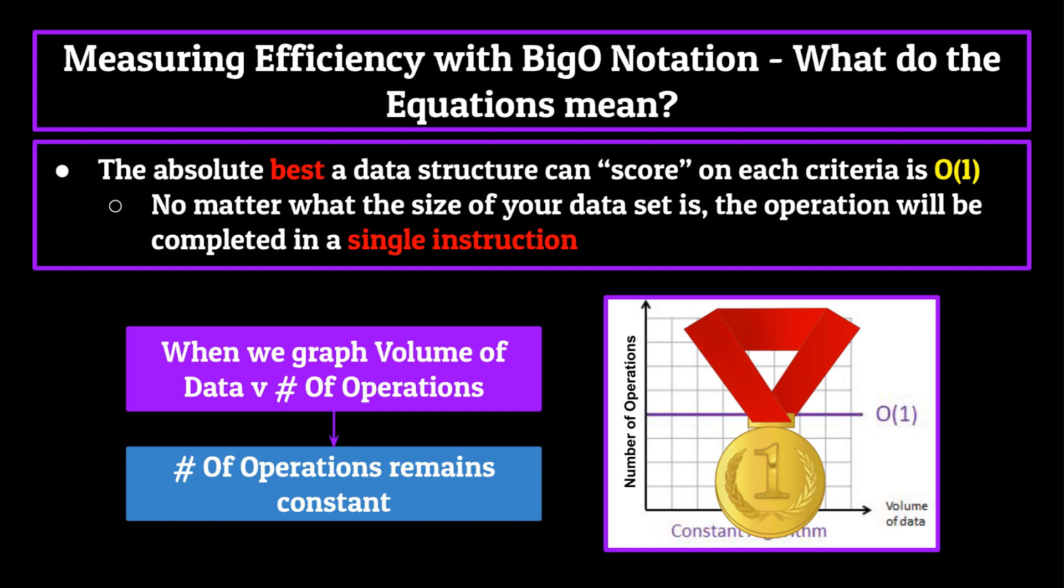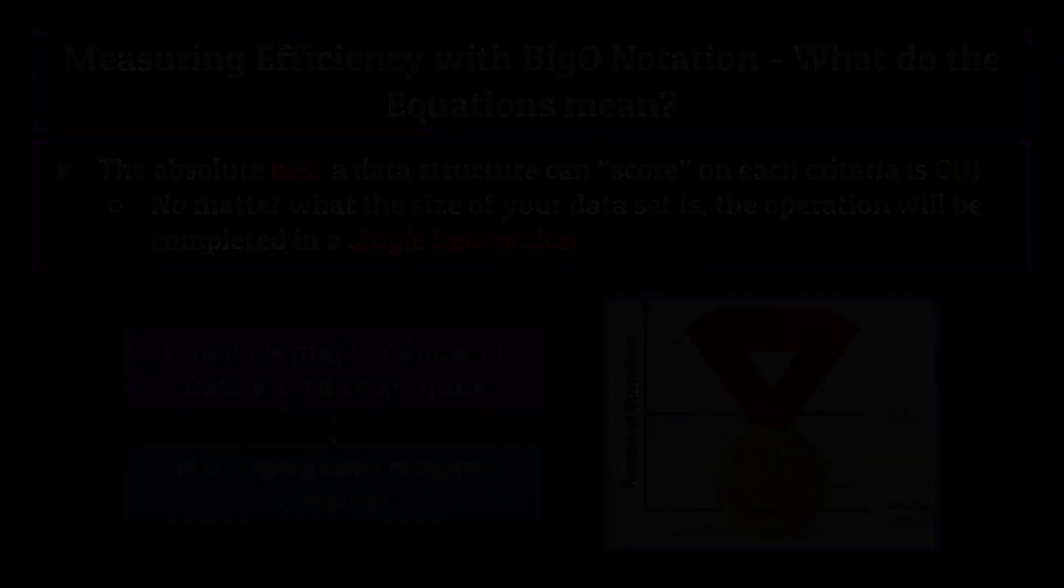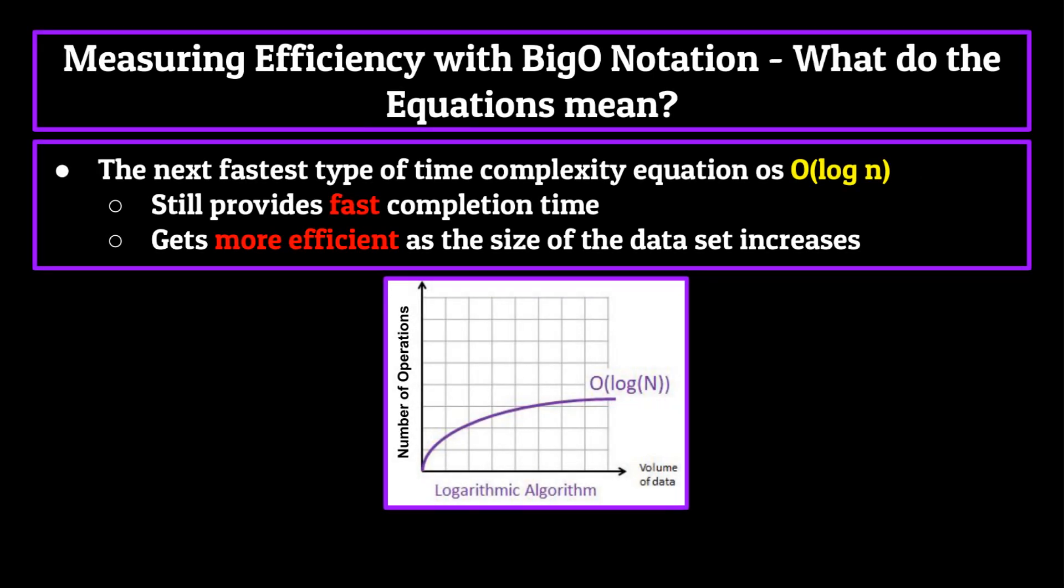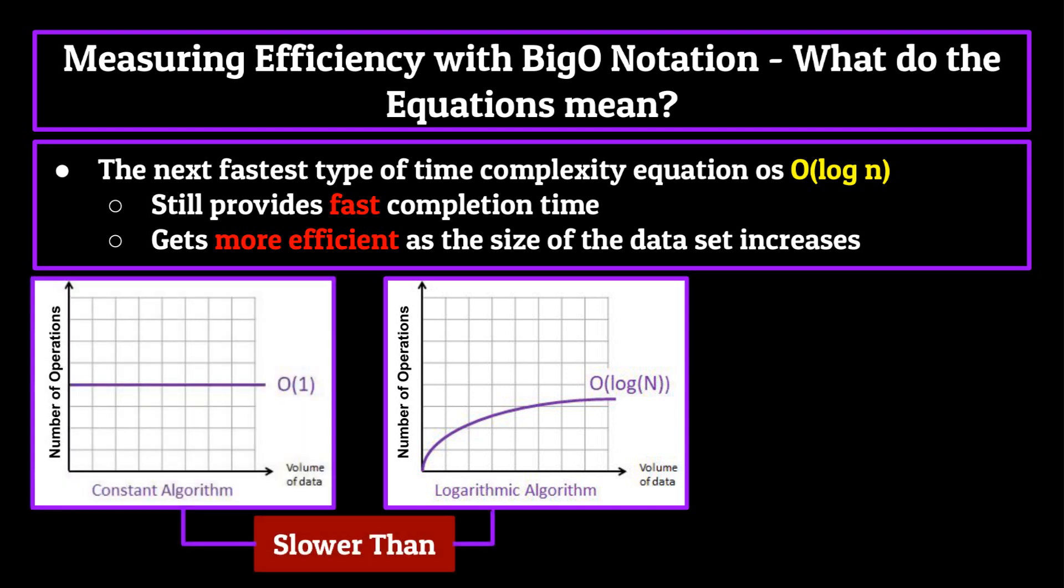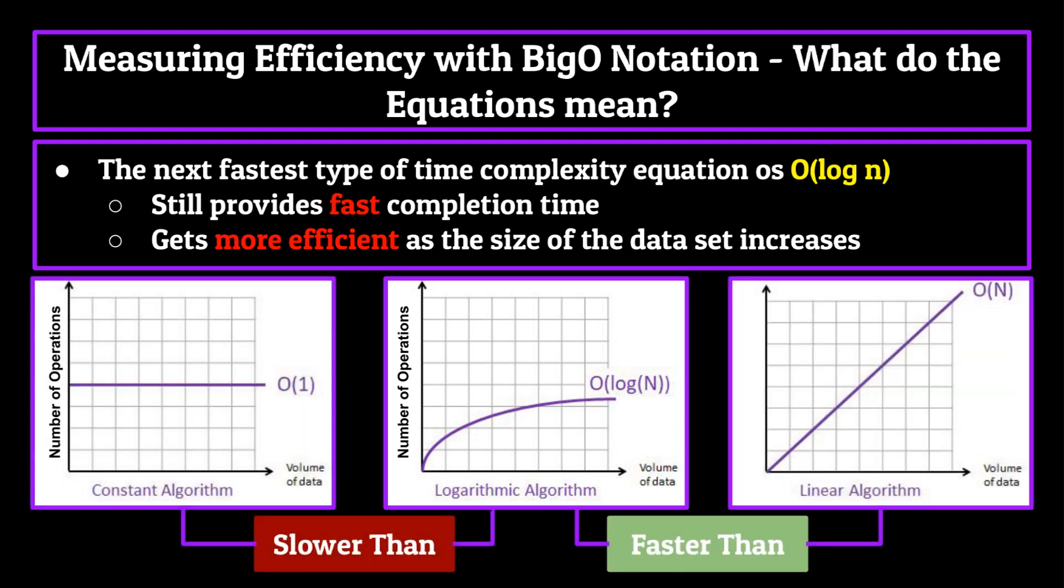The next fastest type of time complexity equation is O log n. While not as fast as instantaneous time, a function having O log n will still provide you with a very fast completion for operations. While you may not fully understand logarithms entirely, just know that this efficiency is slower than instantaneous time, O of 1, and faster than the next level of efficiency, known as O of n.